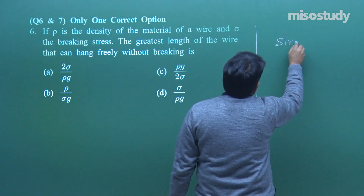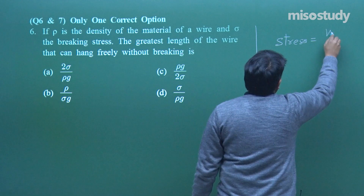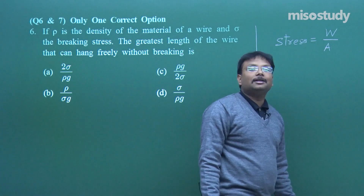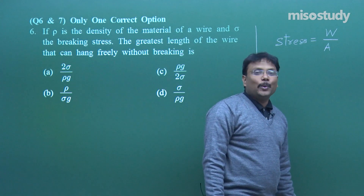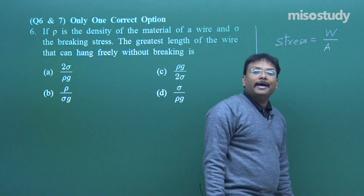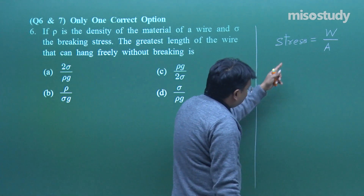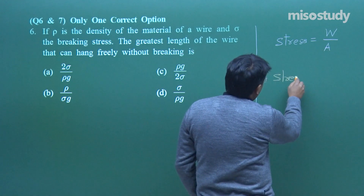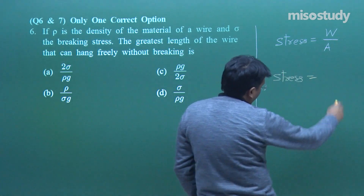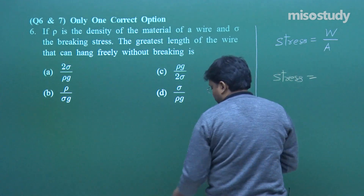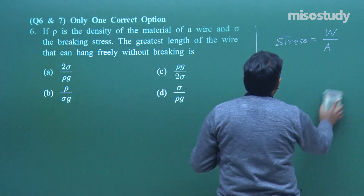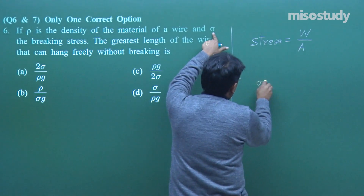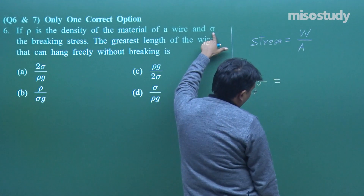So we have the formula: stress is nothing but weight upon area. I had written stress is equal to F upon A, where F I wrote as mg, and mg I wrote as W. So stress equals this much. Let me define it - since it is already given, why necessarily elaborate it? Stress is given as sigma.